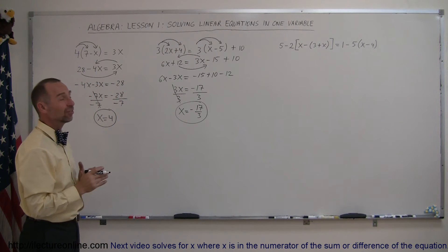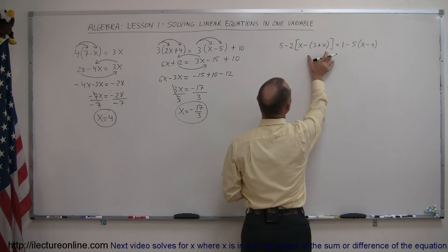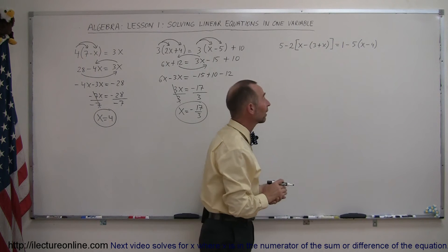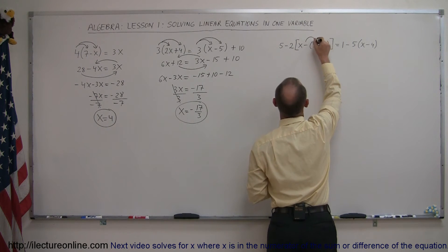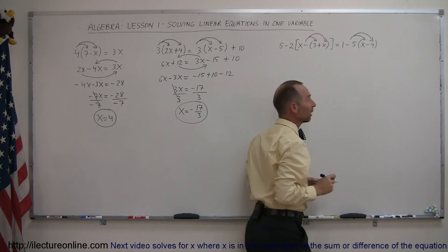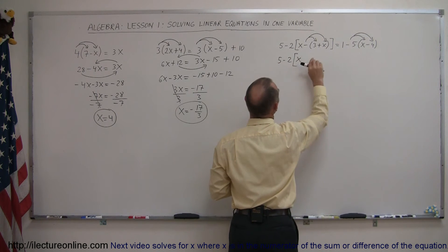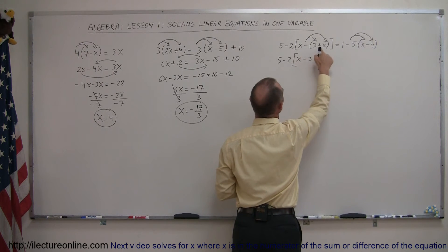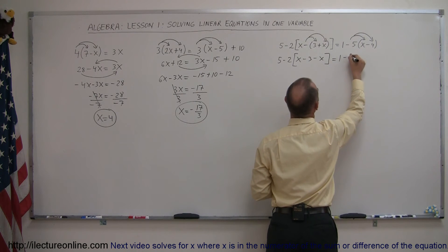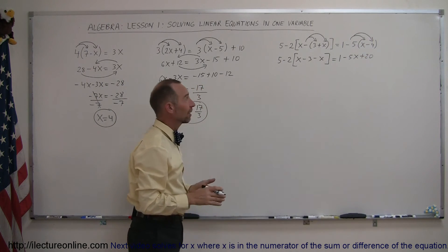Now on to the third example, and there you can see we have a combination of brackets and parentheses. The trick is to first get rid of the inside parentheses and then worry about the outside brackets. On the right side, since we only have one set of parentheses, we can easily solve that at the same time. We're going to distribute the negative sign on the 3 and on the x, and distribute the negative 5 on the x and on the negative 4. So we have 5 minus 2 times the quantity in brackets: distributing the minus gives minus 3 and minus x, equals 1, and distributing negative 5 on x gives minus 5x, and negative 5 on minus 4 gives plus 20. So we've gotten rid of all the parentheses.